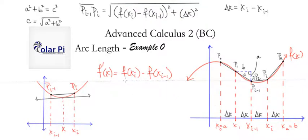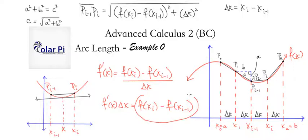And now you see where we're going to find some conveniences because what we're going to do is take this, multiply both sides by delta x, and write that f prime of x times delta x is equal to f of x_i minus f of x_{i-1}. And in doing this, we see that this is exactly that, and we can replace it with this. That's some convenience.